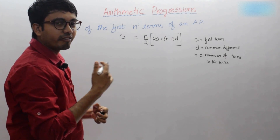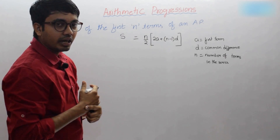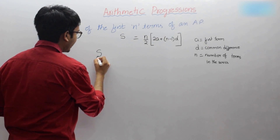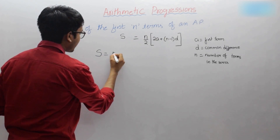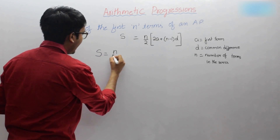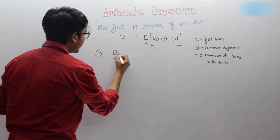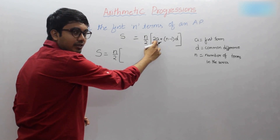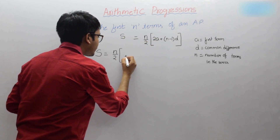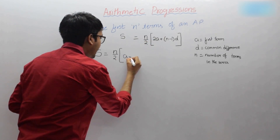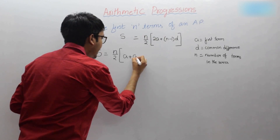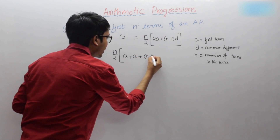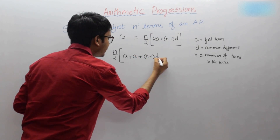Now I'll modify this formula and we'll get a new one. S is equal to n by 2 into 2a, which I'll write as a plus a, giving us a plus a plus n minus 1 into d.